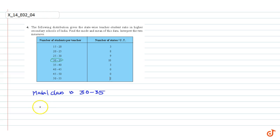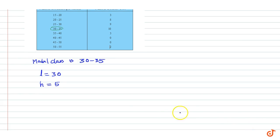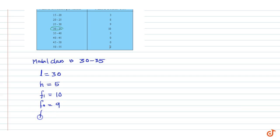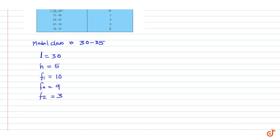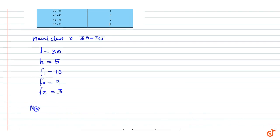The modal class is 30–35. The lower limit of the modal class is L = 30, the class size is H = 5, the frequency of the modal class is F1 = 10, the frequency of the preceding class is F0 = 9, and the frequency of the succeeding class is F2 = 3.